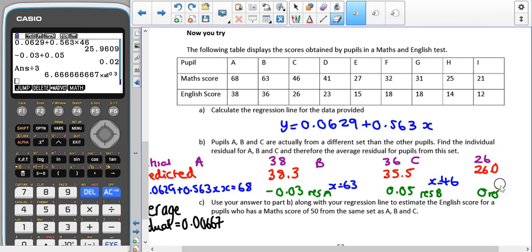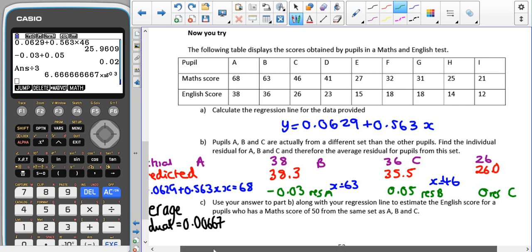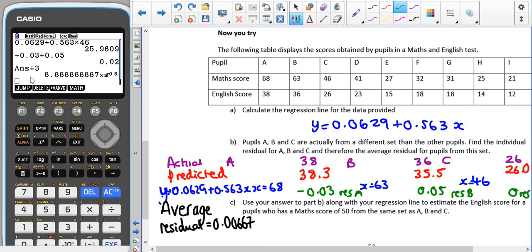For C, our actual value is 26. Our x value is 46, so putting 46 into our regression line gets us a predicted value of 26, which gives us a residual of 0. It doesn't give us exactly 0—my actual value is 25.9609. Our average residual when we add those all together and divide by three ends up being 0.006 recurring.